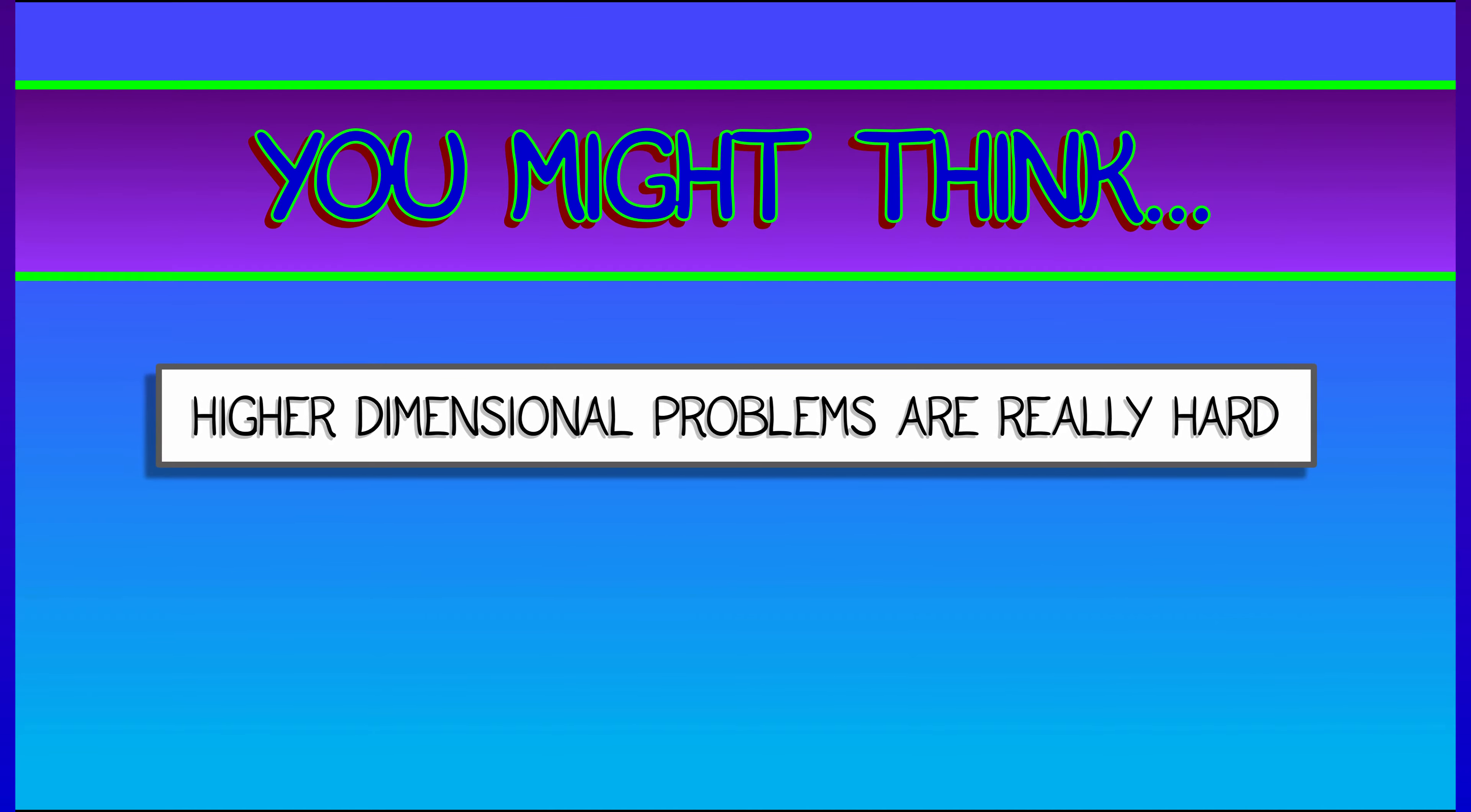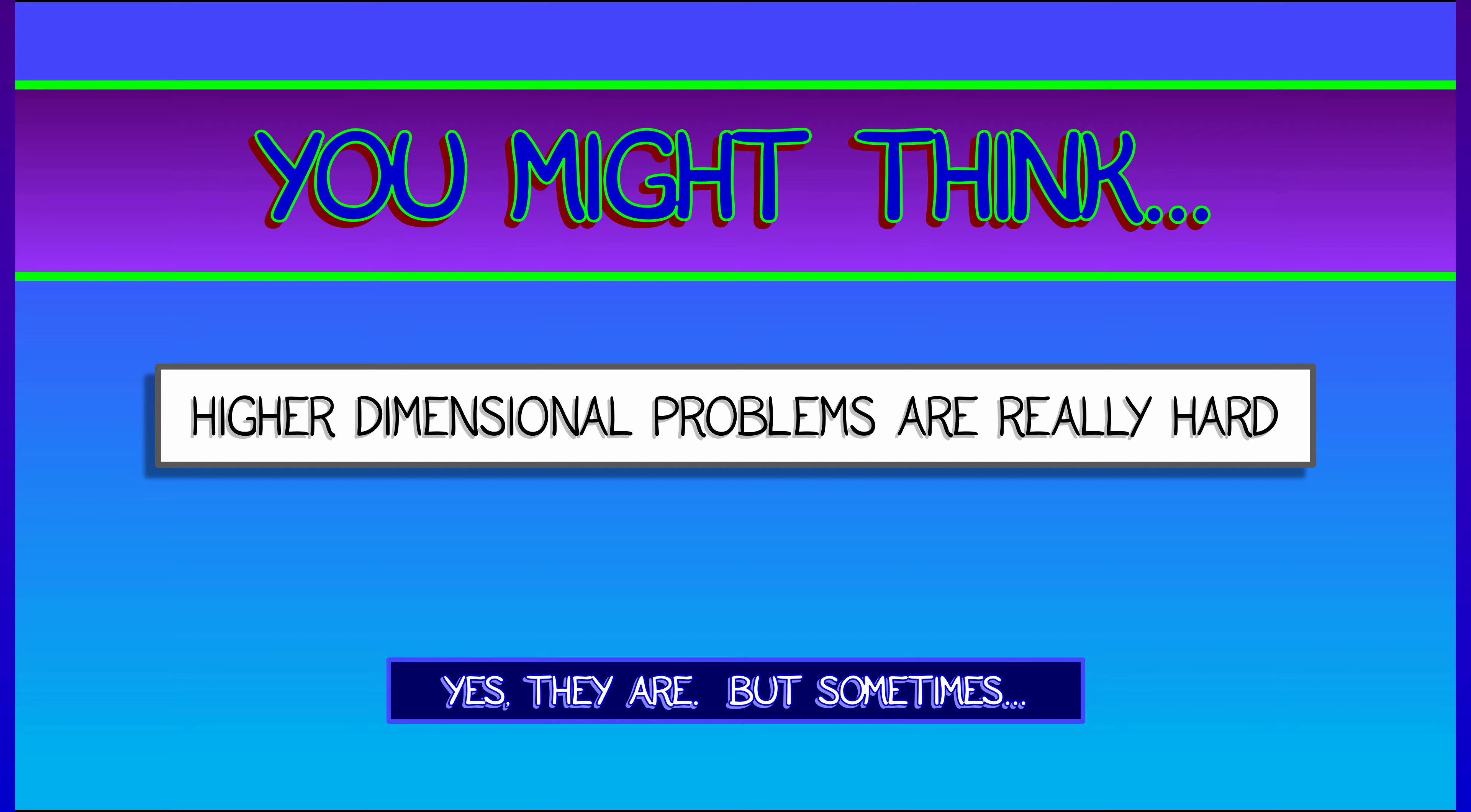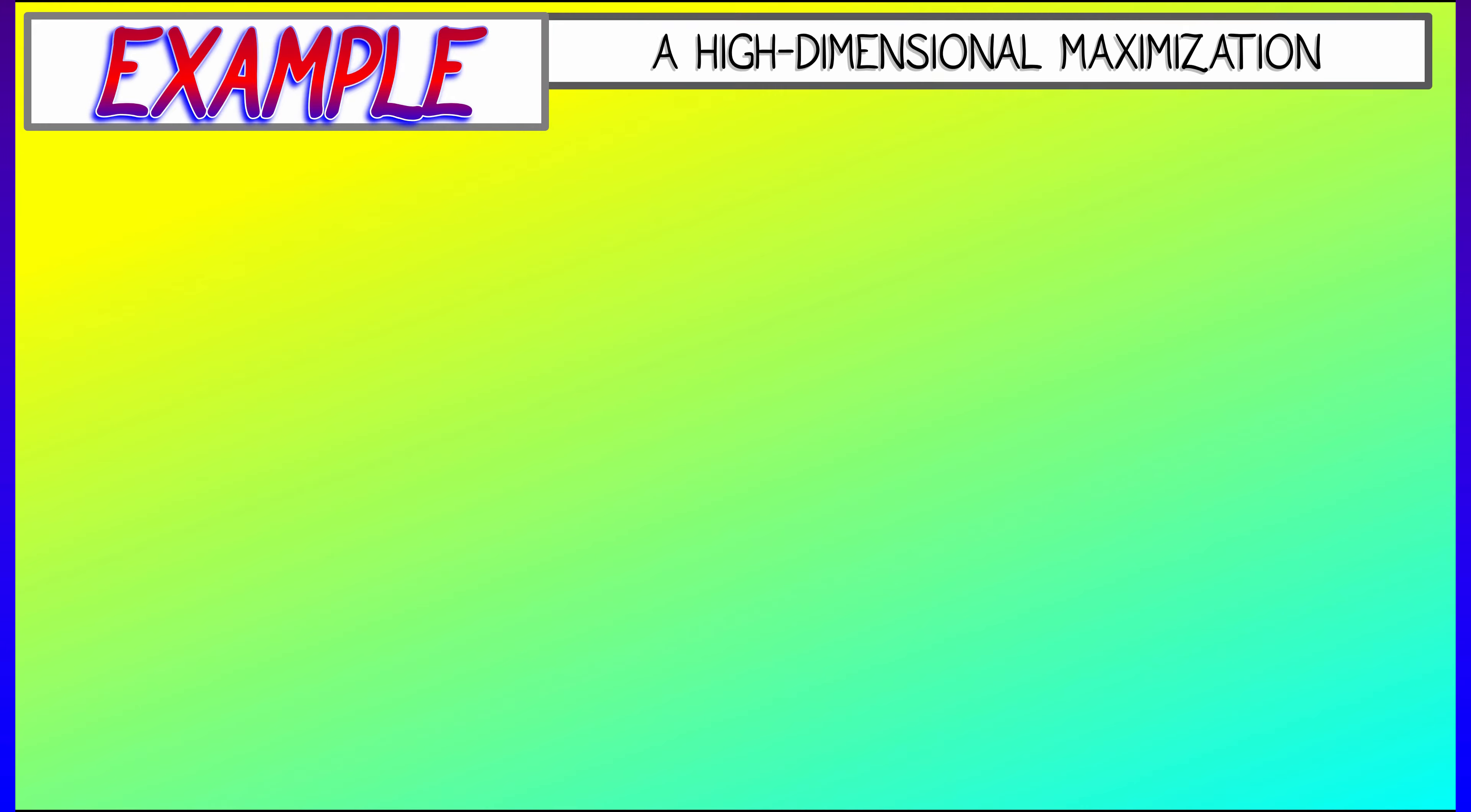Now, based on everything that we've seen so far, you might conclude that higher dimensional optimization problems are really hard. You would be correct, they are. But sometimes you can get somewhere with Lagrange's method, even in arbitrary dimensions.